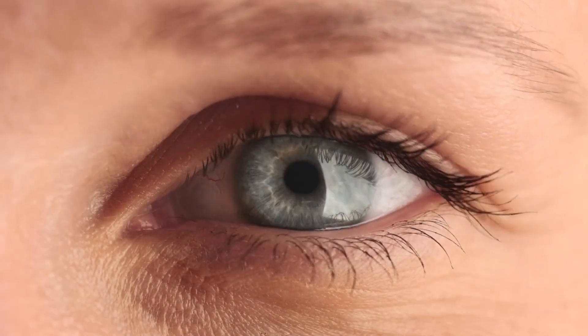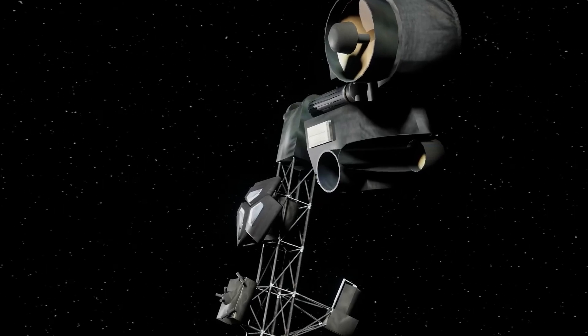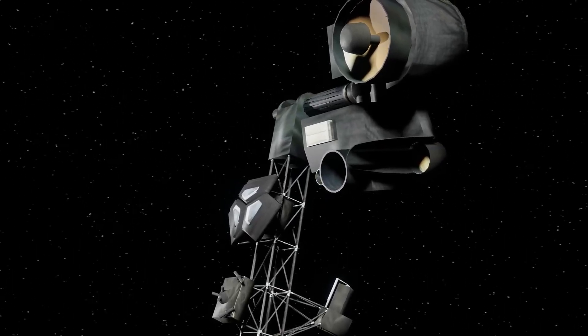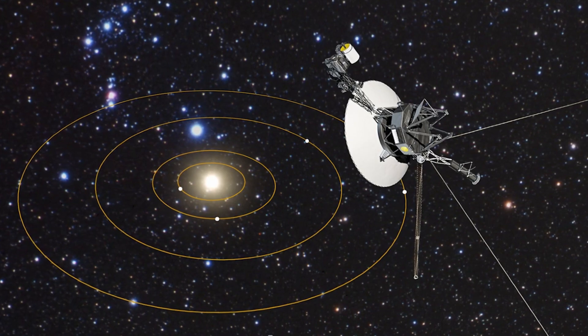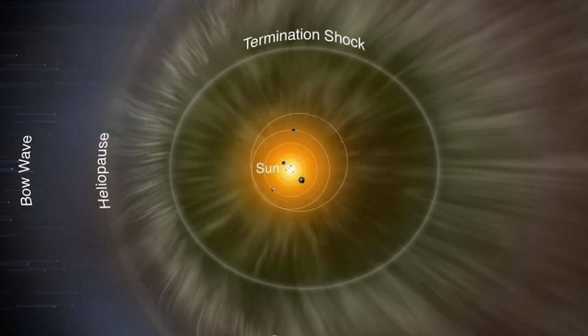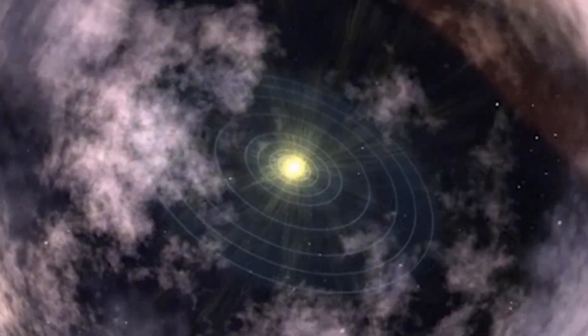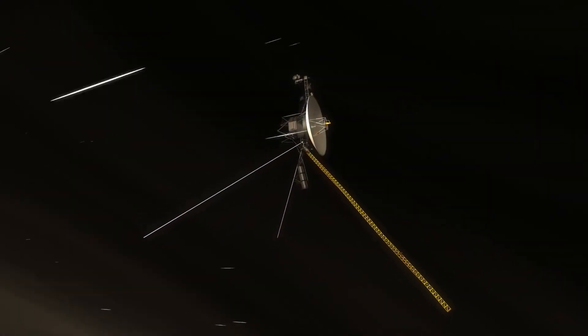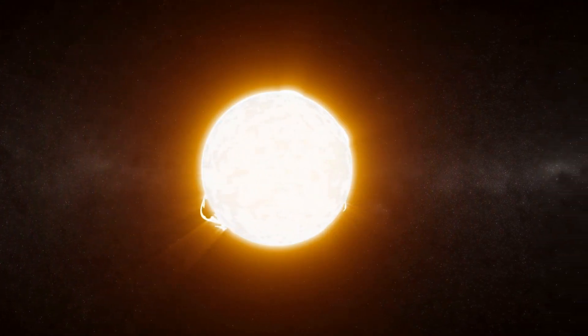Voyager 2 was launched first. Its trajectory was developed to fly past Jupiter, Saturn, Uranus, and Neptune. Voyager 1 was launched second, but on a faster and shorter trajectory. It was designed to send the spacecraft closely past Saturn's largest moon Titan. At the same time in the 90s, Voyager 1 overtook the slower deep space probes Pioneer 10 and Pioneer 11 and became the most distant human-made object from Earth.